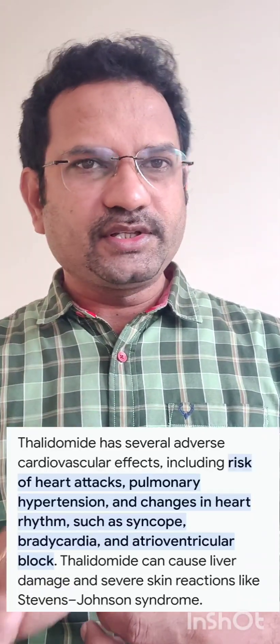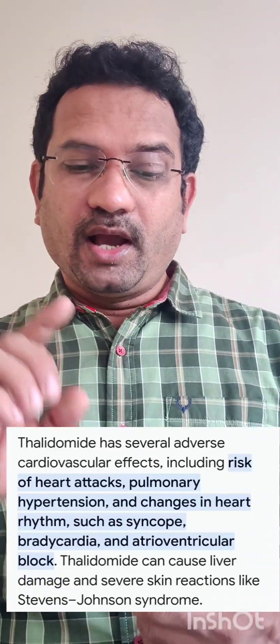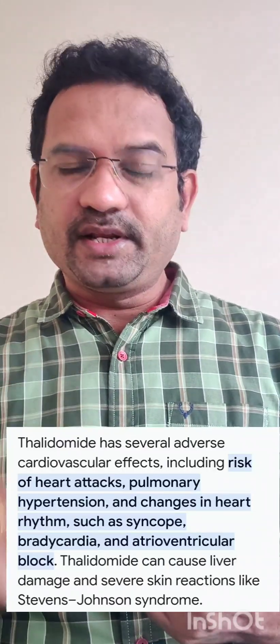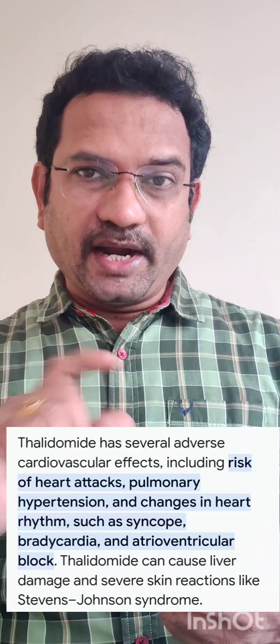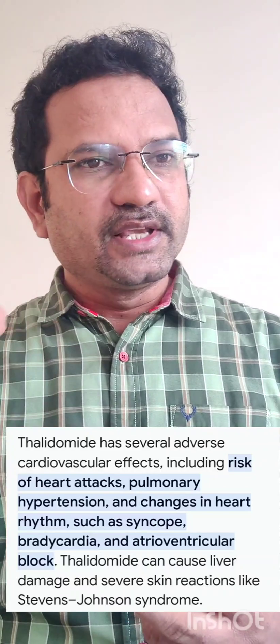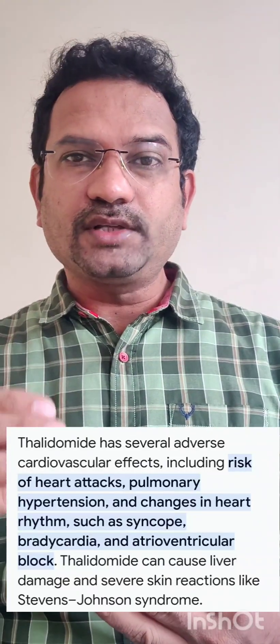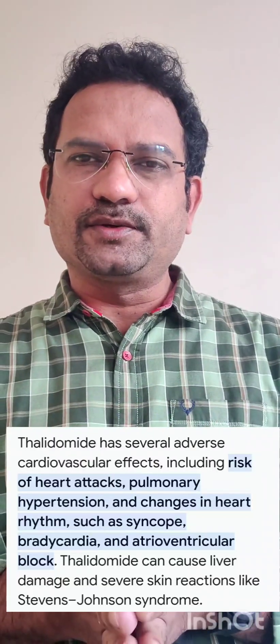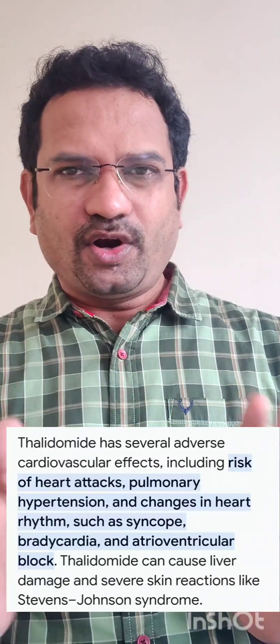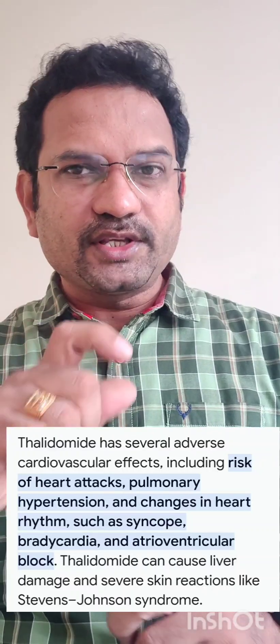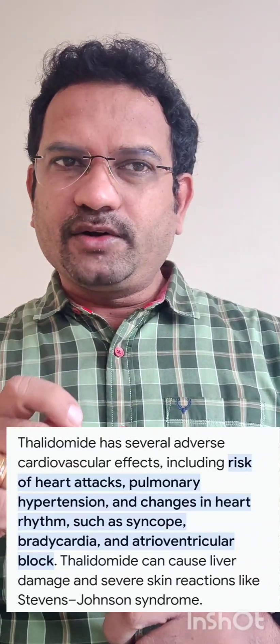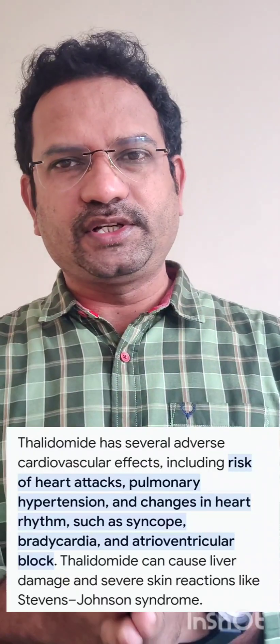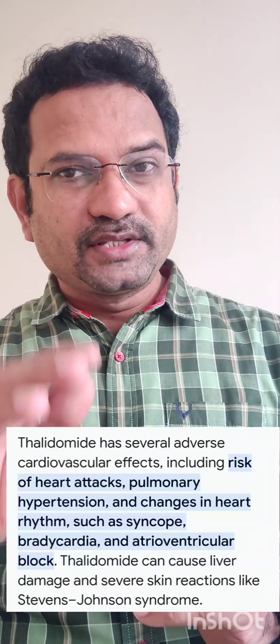Option B states that apart from teratogenesis, thalidomide does not show any other toxicity. This is not correct. Apart from teratogenesis, thalidomide can cause heart attacks and pulmonary hypertension. It may cause bradycardia — a decrease in heart rate — which may cause syncope, meaning faintedness. It may also cause atrioventricular block and liver damage. So option B is not correct, and since the question asks which is not correct, option B is the correct answer.